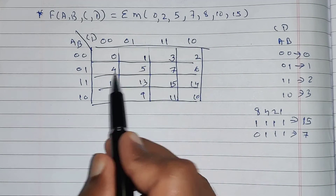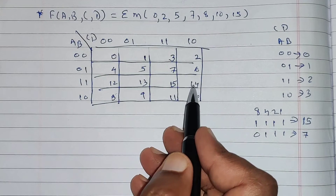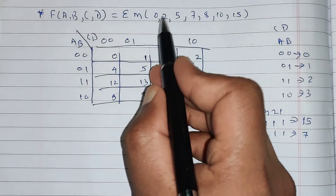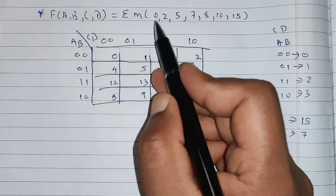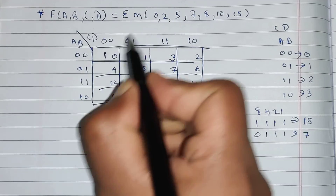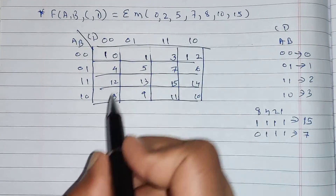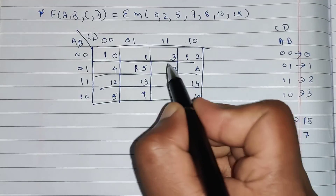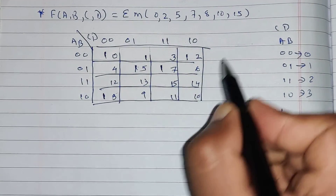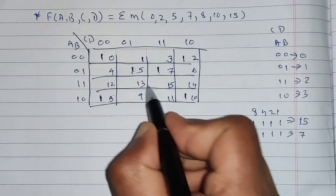For the given minterms, we will write 1 in the K-map. So, 0 is 1, 2 is 1, 5 is 1, 7 is 1, 8 is 1, 10 is 1, and 15 is 1.